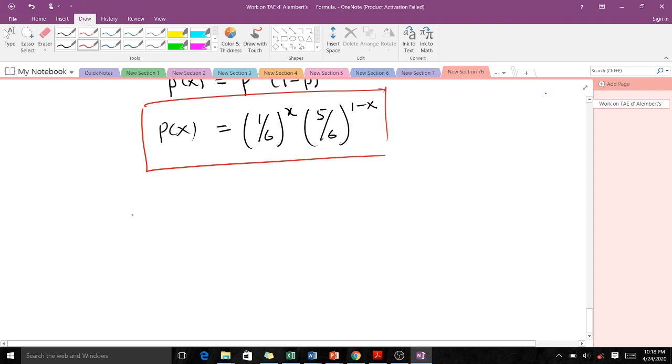The next question said we should find the mean. The mean is the same as the expectation of X, which is given as p. In this case, our p was 1/6, so that's our mean.